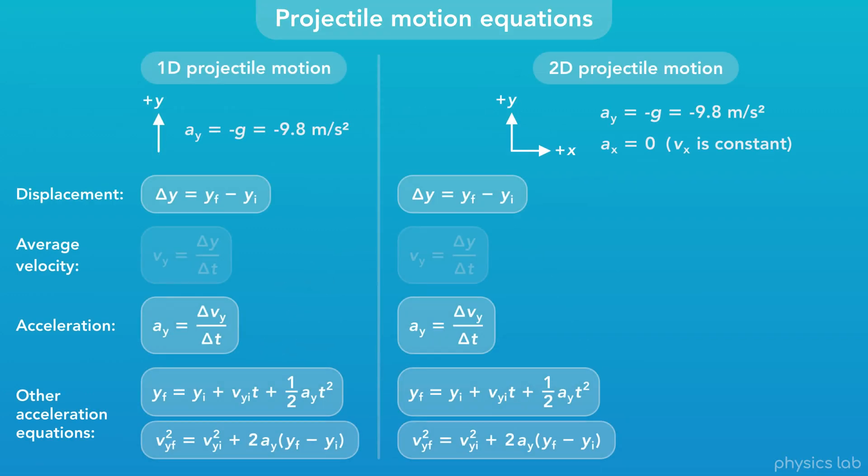For 2D projectile motion, we're going to use the same kinematic equations for the y direction, but we also need some equations in the x direction. Since there's no horizontal acceleration, we won't use the x equations with acceleration. So we just have the displacement and velocity equations.